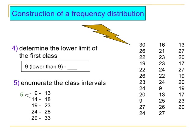The fourth step is to determine the lower limit of the first class interval. The first lower limit could be the lowest observable value or a value lower than the lowest observable value. In our example, the lowest observable value is 9, so we can use 9 as the lower limit of the first class interval, or a number below 9.